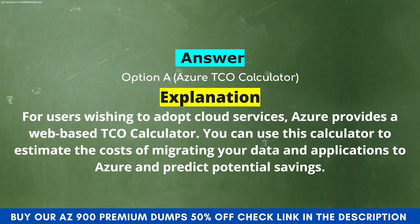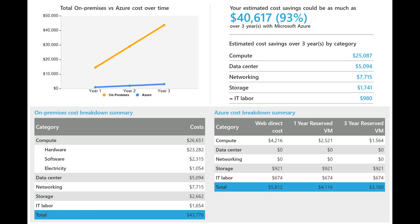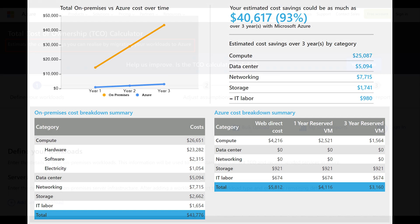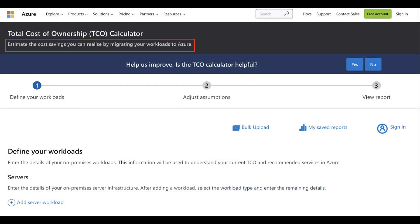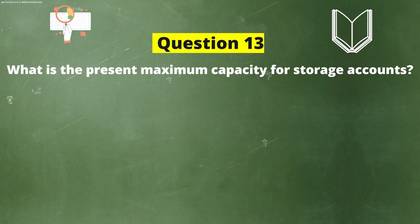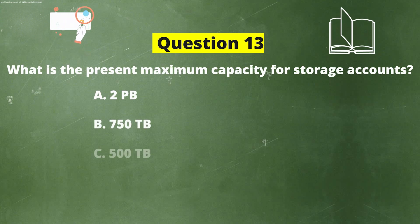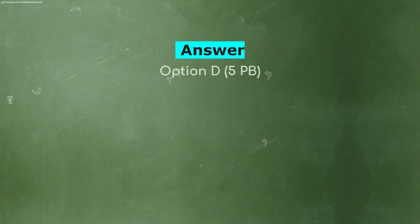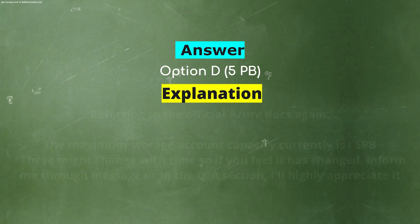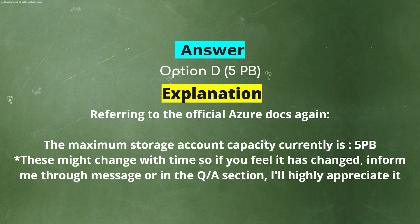Next question. What is the present maximum capacity for storage accounts? Option A: 2 PB. Option B: 750 TB. Option C: 500 TB. Option D: 5 PB. The correct answer is Option D — 5 PB. Referring to the official Azure docs, the maximum storage account capacity is currently 5 PB. This might change over time, so if you feel it has changed, please inform via message or in the Q&A section.